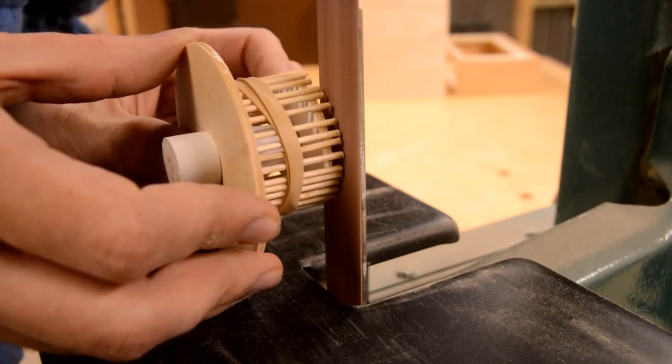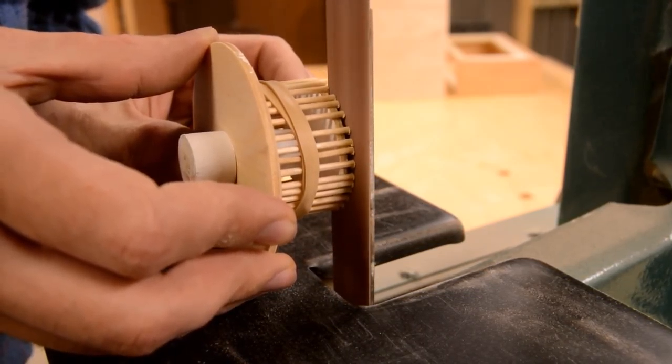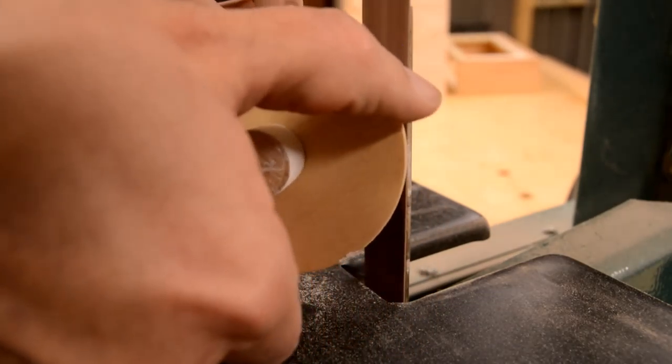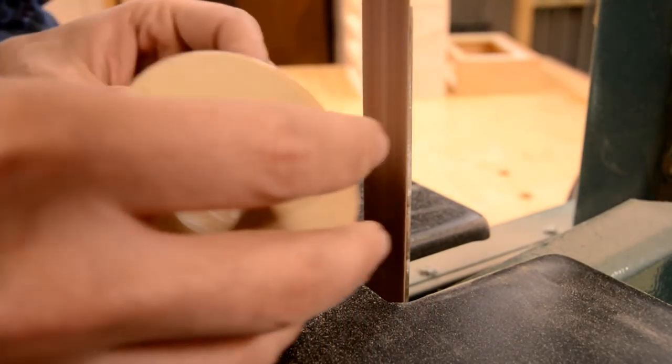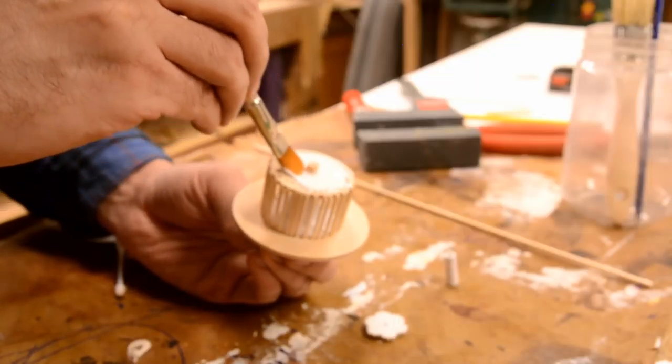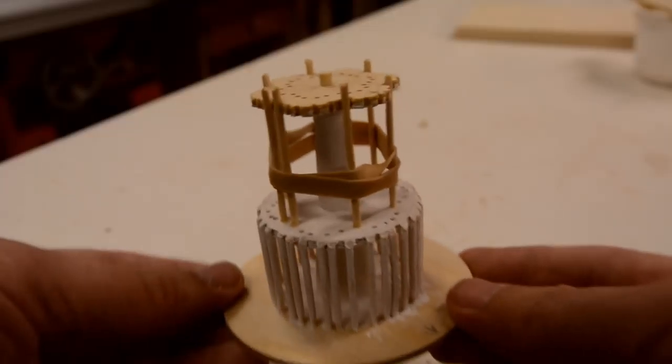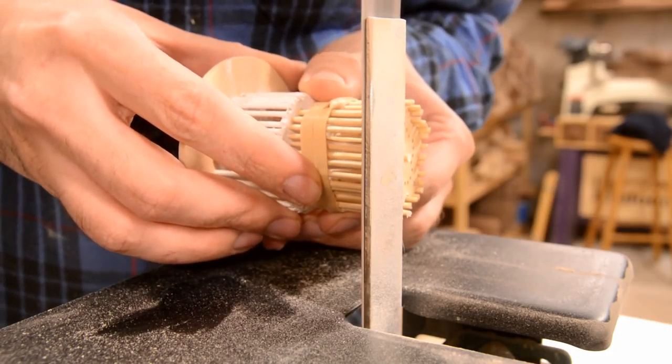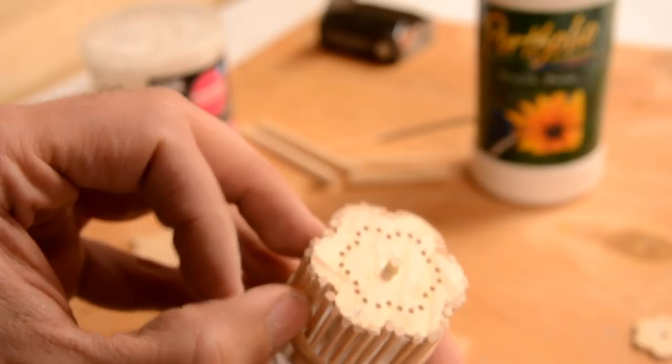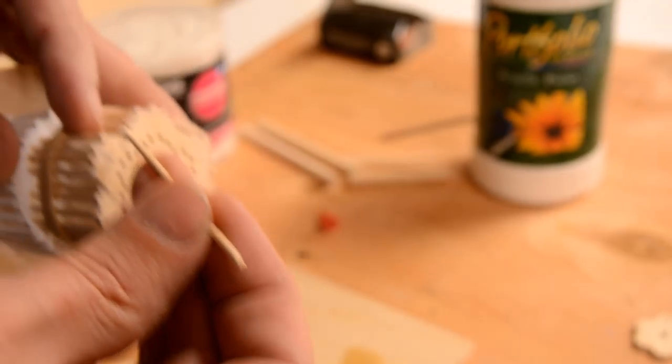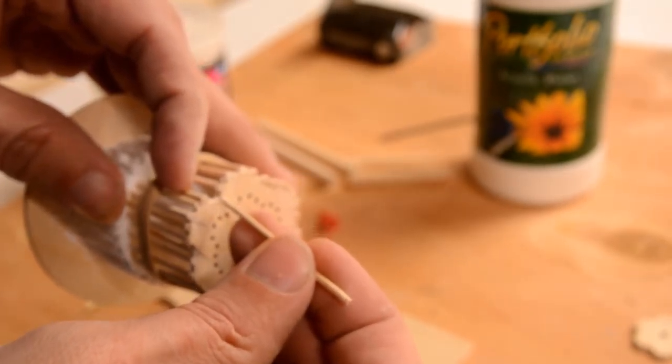Then once the glue dried, I could sand the toothpicks flush with the upper disc. I'm also putting a little bit of a chamfer on the edges after sanding them flush. And then it was just a matter of working my way up through the same process through each tier. And you have to accept the fact that you're going to discover some of these are going to end up being loose and you'll need to glue them back on.